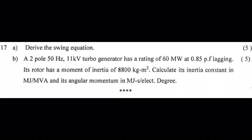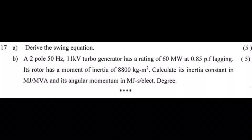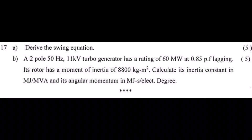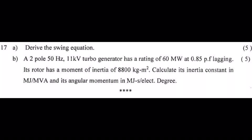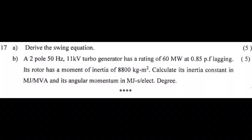Question B: A 50Hz, 11kV turbo generator has a rating of 60MVA at 0.85 power factor lagging. Its rotor has a moment of inertia of 8800 kgm². Calculate its inertia constant H in MJ per MVA and its angular momentum M in MJ per electrical degree.